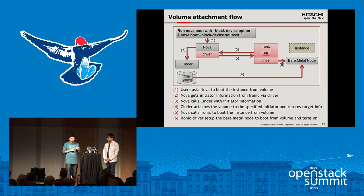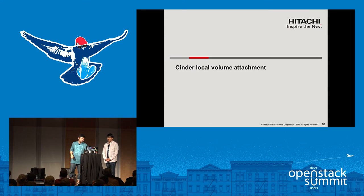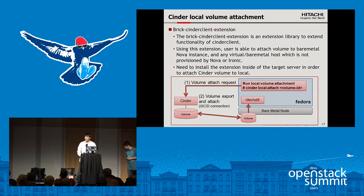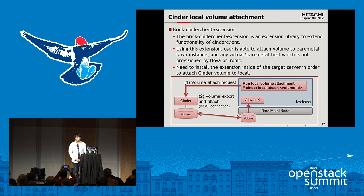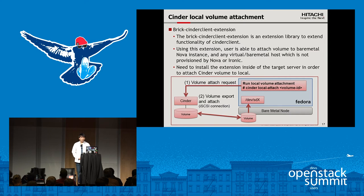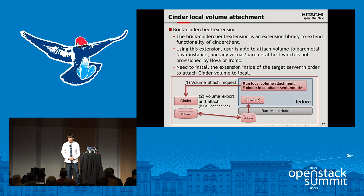From the next slide, Mitsuhiro will explain Cinder local volume attachment. Using Nova and Cinder, a user can attach a Cinder volume to a Nova instance. The brick Cinder client extension is an extension library to extend current Cinder functionality. Using this extension, a user is able to attach a volume to a bare metal Nova instance and also to any virtual or bare metal machine not provisioned by Nova or Ironic. In order to use this client, the user needs to install the extension inside the target server.